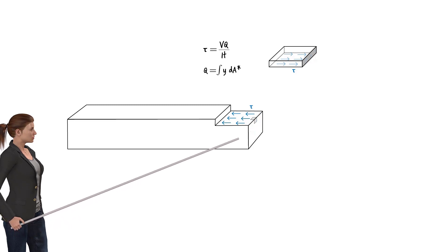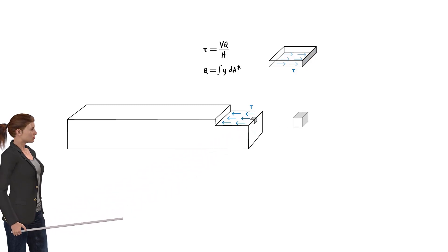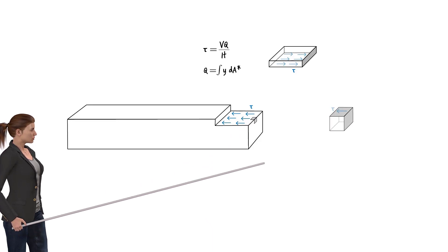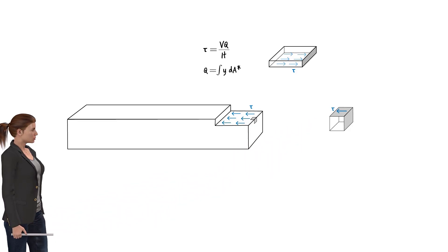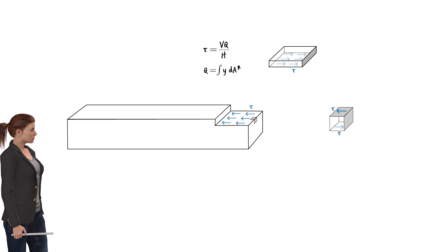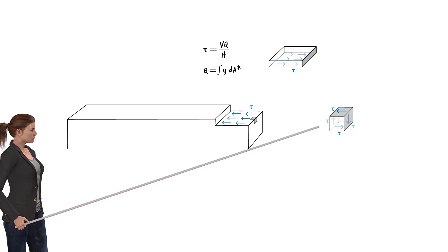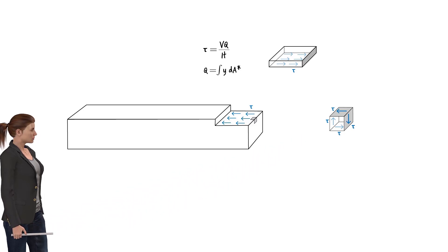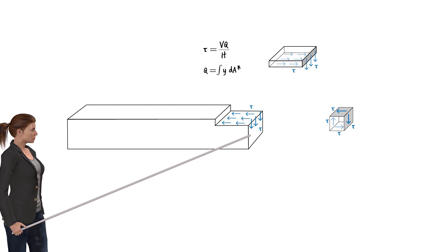To see why this is the case, let us isolate an infinitesimal cube from the beam along this edge. We know the shear stress at the top of the cube is tau. Since the cube must be in static equilibrium, the shear stress at the bottom surface must also be tau. This shear stress pair, however, produces a counterclockwise moment. Hence, an additional clockwise moment is needed, produced by an additional shear stress pair acting on the sides of the cube. Therefore, the shear stress acting on the cross-section of the beam is tau. The shear stress at a point is present in two orthogonal directions — on both the vertical and horizontal planes.